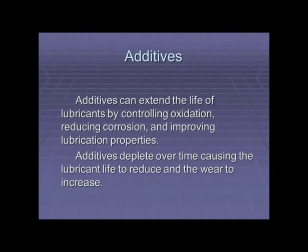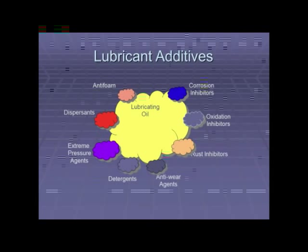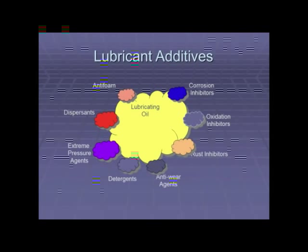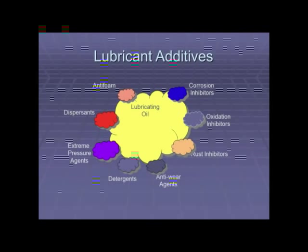Additives can extend the life of lubricants by controlling oxidation, reducing corrosion, and improving lubricant properties, but they deplete over time, causing lubricant to degrade and wear to increase. Depending on the oil you buy, a specific number — like an ExxonMobil product number — tells you what additive package is in that oil. We have to monitor with testing to know when our additives are consumed. Common additives include anti-foam, dispersants, extreme pressure agents, detergents, anti-wear agents, rust inhibitors, oxidation inhibitors, corrosion inhibitors, and many more. We must monitor these and know when they're used up, which will also cause oil to oxidize and shorten its life.